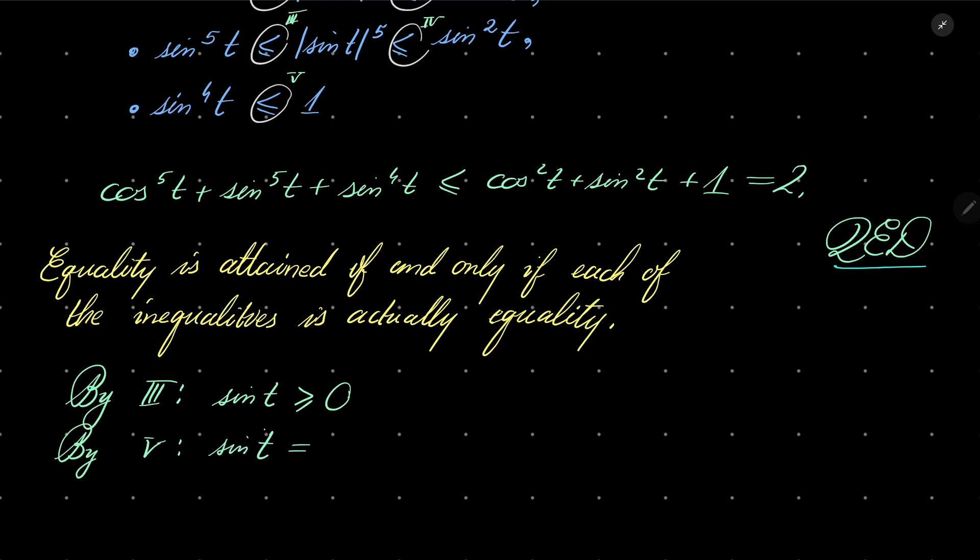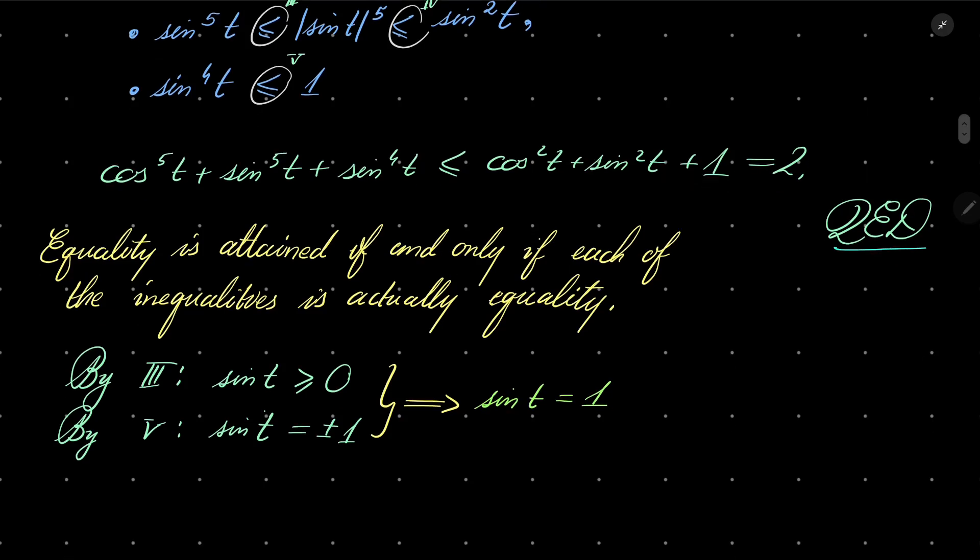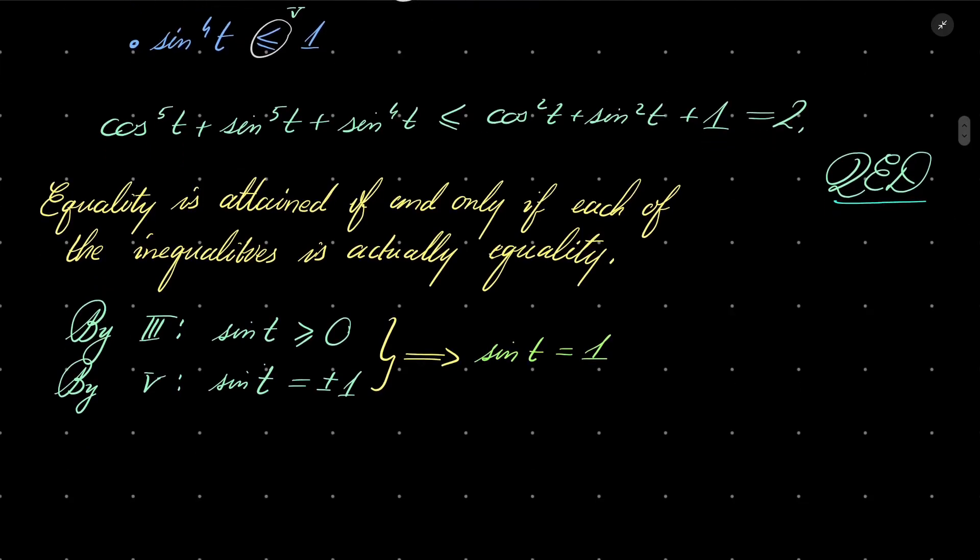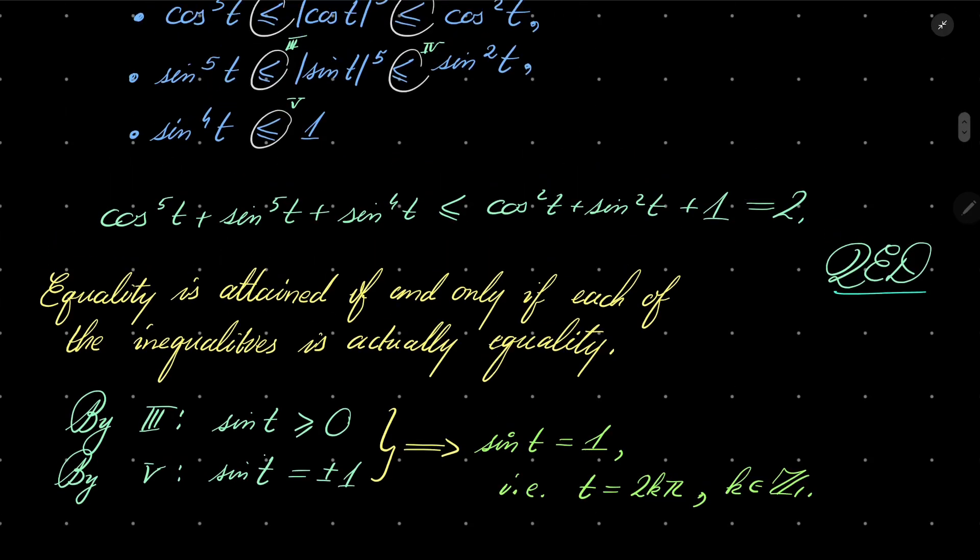So, sine of t is either plus or minus 1. Combining these two observations, we can safely say that sine of t must be, in fact, equal 1. When does it happen? Well, sine of t is 1 for t, where t equals 2k pi, where k is an integer, and let's verify every other inequality.